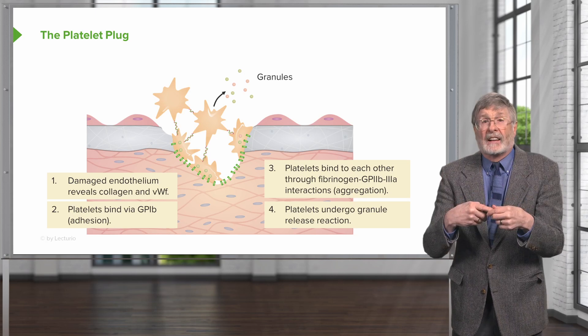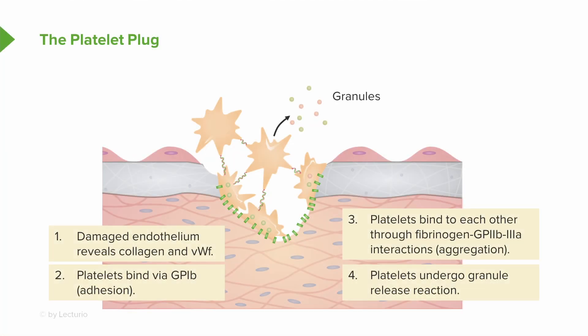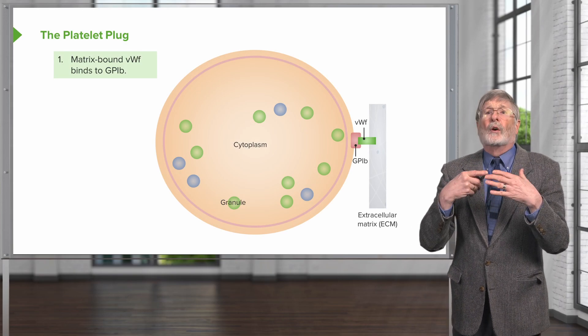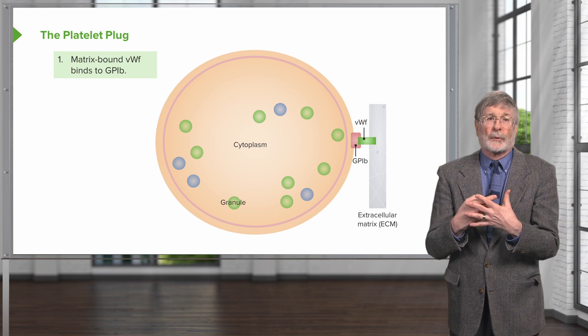The platelets have also undergone a shape change and become activated — that's how we got that expression of the GP2b3a. But they're also releasing granules that will recruit other platelets going by in the circulation. So let's talk about those recruitments through the granule release.